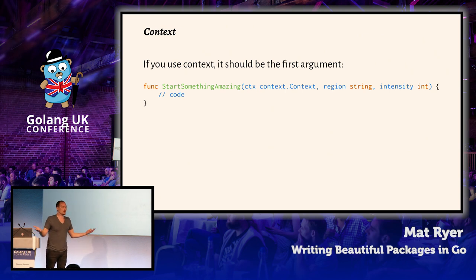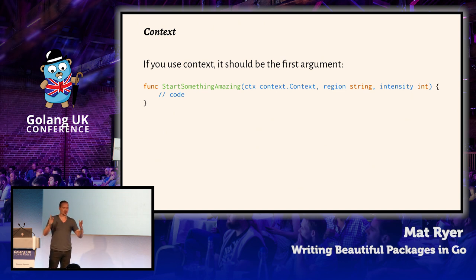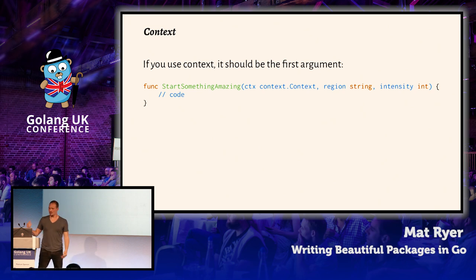Context probably should be the first argument. If you're going to have context, have it as the first argument. I did see an example where there were a few arguments and context was just one of them, and it kind of just felt weird.